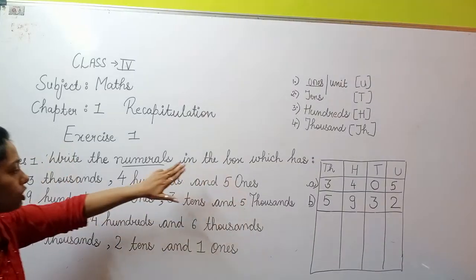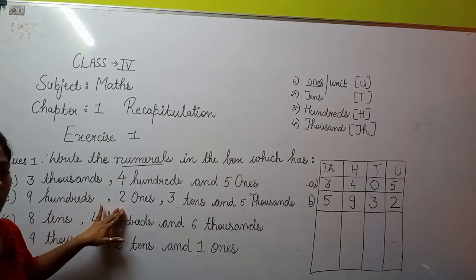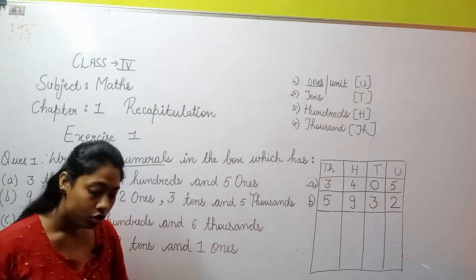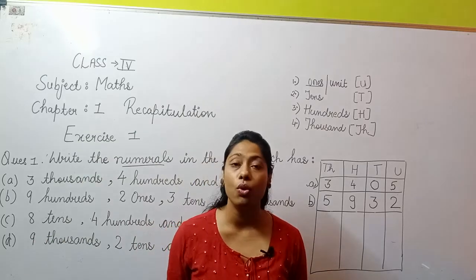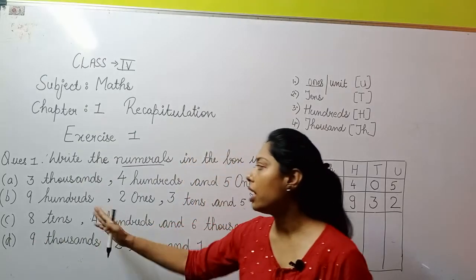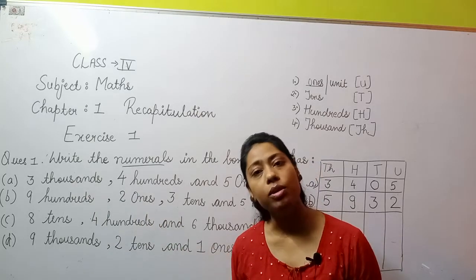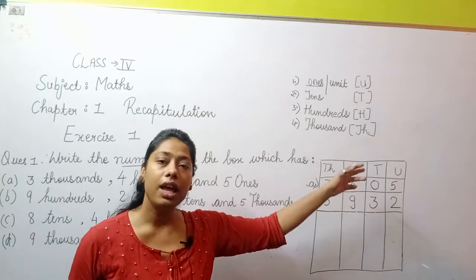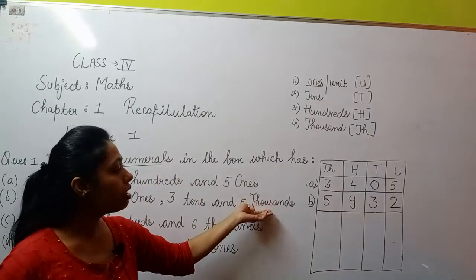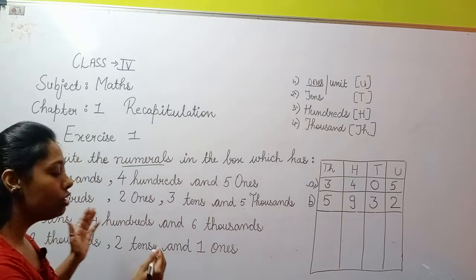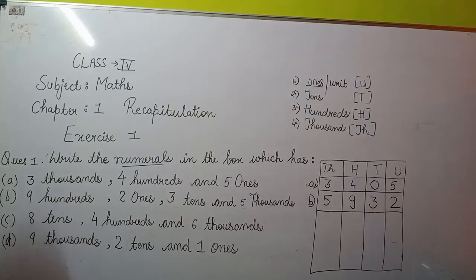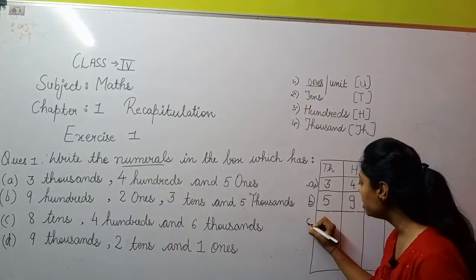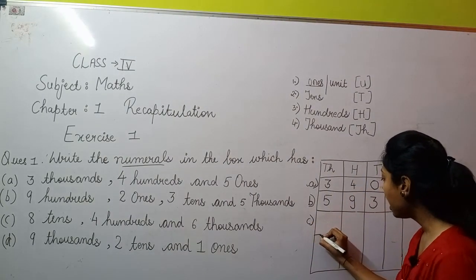Ab aap dekho — A part mein ones last mein given tha, B part mein beech mein diya gaya, aur thousands pehle ya baad mein bhi aa sakta hai. Toh kya isse koi problem hoti hai? No, koi problem nahi hoti. Chahe hundreds, ones aage-peeche kaise bhi given ho, kyunki humne already table bana di hai — sirf values put kar rahe hain. Answer mein koi difference nahi aayega.